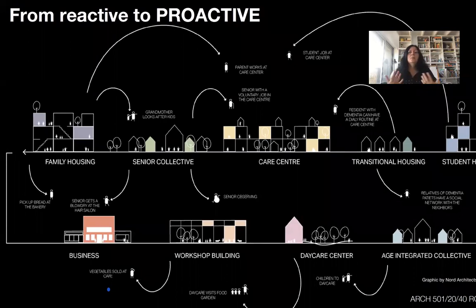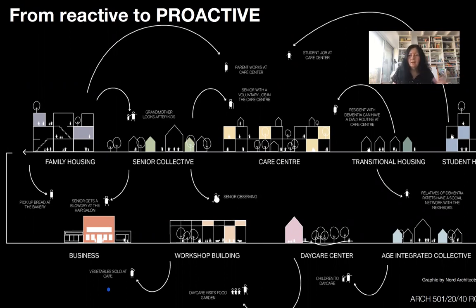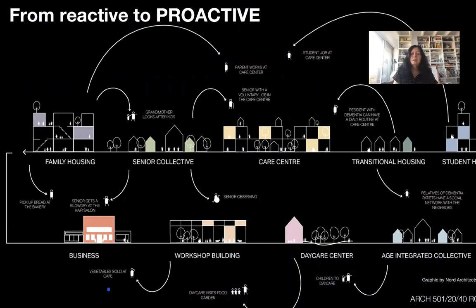So how do we get from this reactive process to a more proactive one? In the studio, we're looking at examples from around the world — not mainstream, but small — and nevertheless we can learn from them. What do we have to change? What process do we have to change? We can only make these changes with everyone at the table — the people who finance, the people who operate, the people who live there — all in one process.